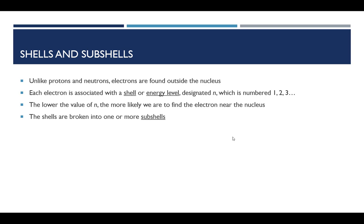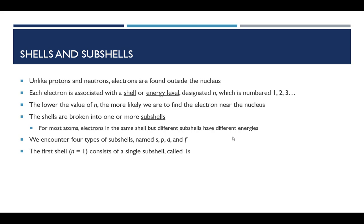Those shells can be broken into subshells. If electrons are in the same shell but different subshells, they likely have different energies. And we are going to name those types of subshells with the letters S, P, D, and F. When we look at the first shell or the first energy level, it has only one subshell in it, and we call that 1S. When you get to the second shell, we have an S subshell, and we name it 2S, and a P subshell, and we name that 2P.